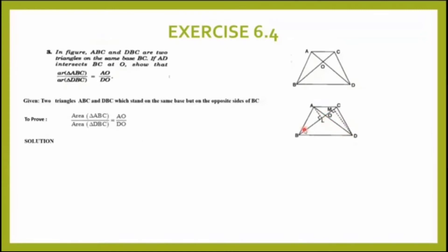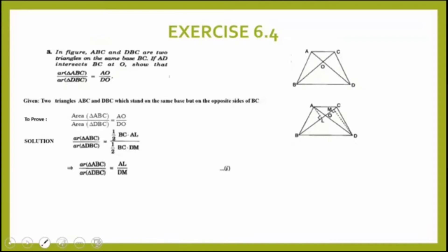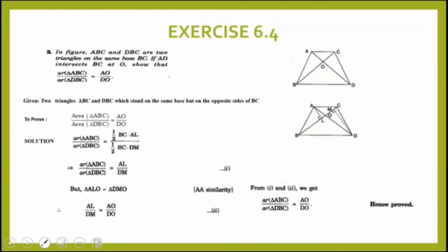I need to find area of ABC upon area of DBC. Area of ABC equals half times base BC times altitude AL. Similarly, area of DBC equals half times base BC times altitude DM. So area of ABC to area of DBC comes out to be AL upon DM. Since I proved AL upon DM equals AO upon DO by the AA rule of similarity, therefore area of ABC to area of DBC equals AO upon DO.